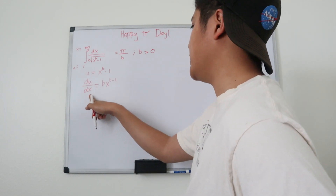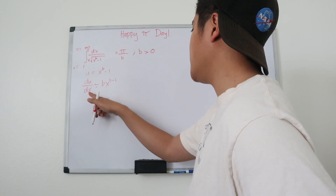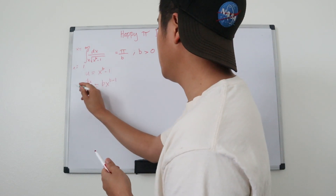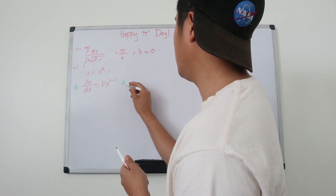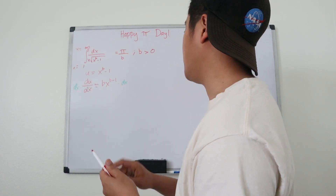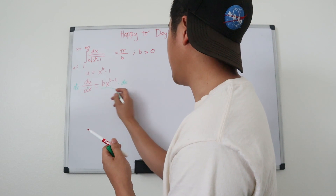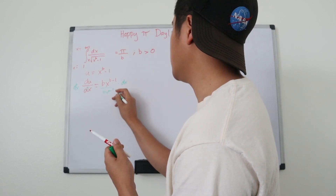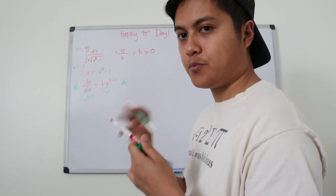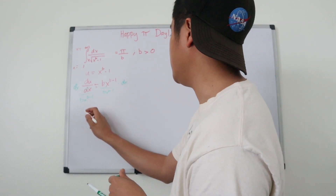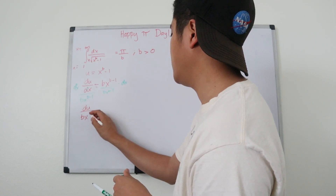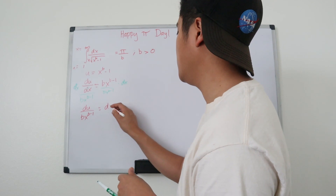We're going to solve for dx. To do that, we multiply both sides by dx, and then divide both sides by b·x to the b minus 1. This gives us du over b·x to the b minus 1 is equal to dx.